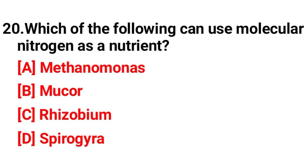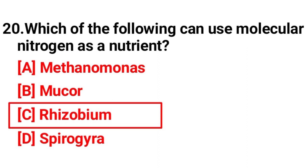Question number 20: which of the following can use molecular nitrogen as a nutrient? The correct answer is option C, rhizobium.